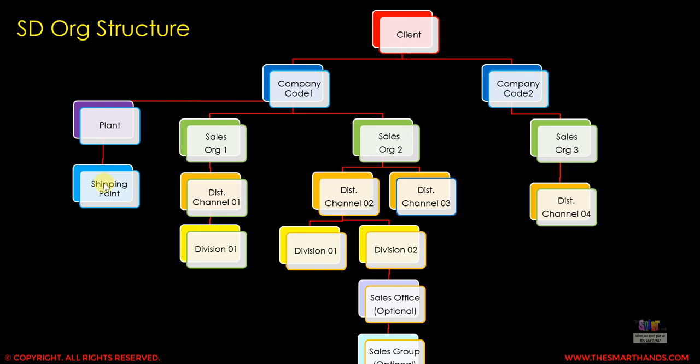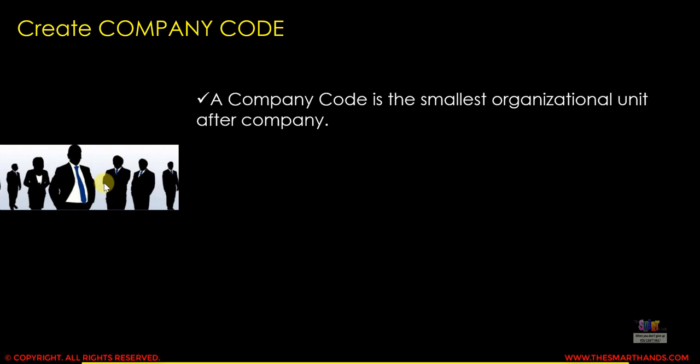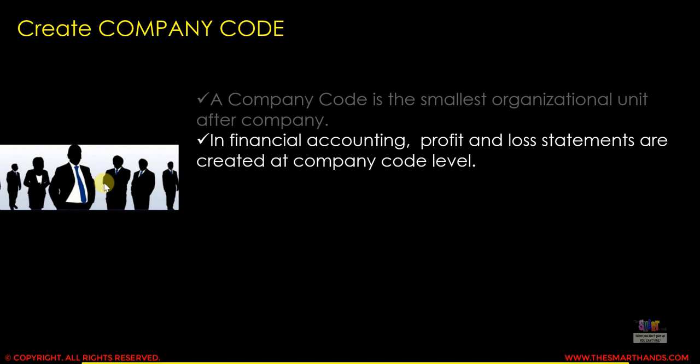I'm going to talk about each of the org unit descriptions — just an overview before we create them. First, what does company code mean? A company code is the smallest org unit after company. On the top we have company, under company we have company code. In financial accounting, profit and loss statements are created at the company code level.